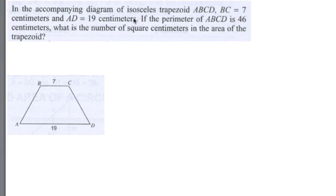Okay, so here we have, they say in the accompanying diagram, an isosceles trapezoid, and that's trapezoid A, B, C, D. So if you follow the letters A to B, C to D,